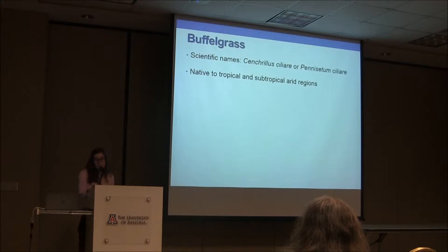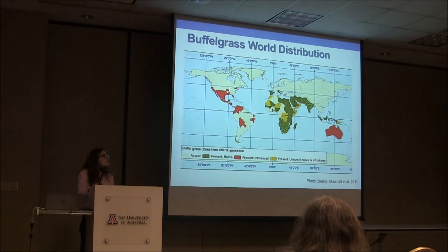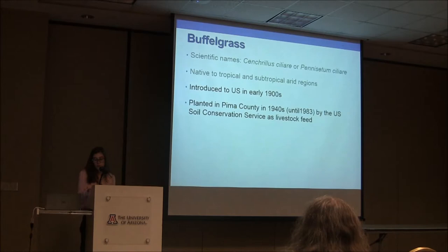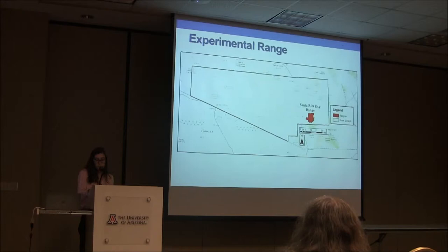Some quick facts about buffelgrass: it is native to tropical and subtropical arid regions. Here's a map showing its world distribution. The areas in green represent its native distribution, located in Africa and southern Asia. The red areas show where buffelgrass has been introduced. Buffelgrass was introduced to the United States in the early 1900s. It was planted in Pima County in the 1940s by the U.S. Soil Conservation Service as livestock feed, originally in the Santa Rita Experimental Range in the Santa Rita Mountains south of Tucson.